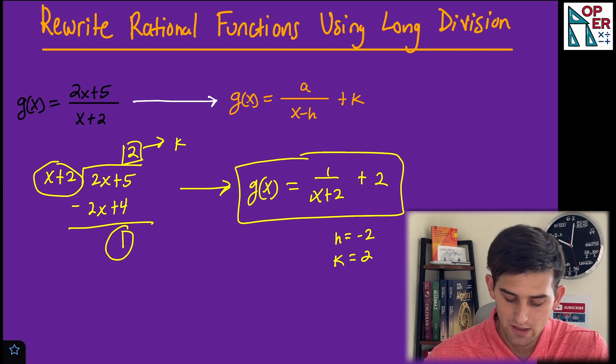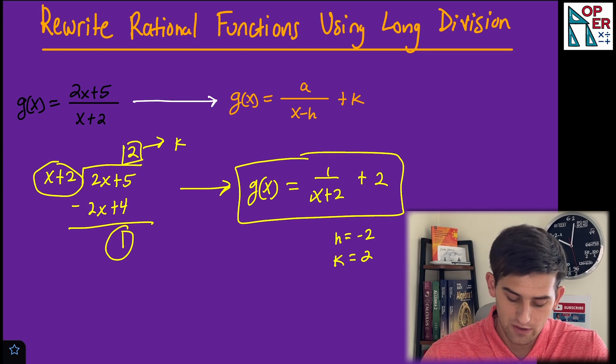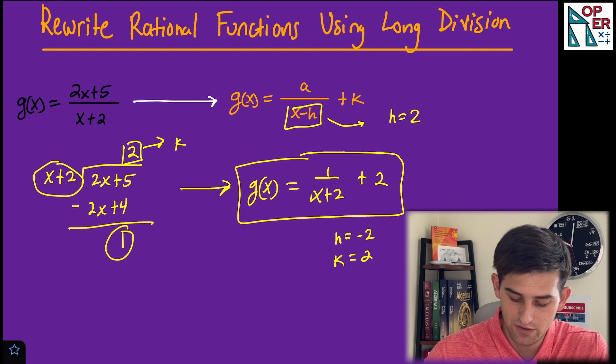Now you might be saying, wait, why is h negative 2? Shouldn't h be positive 2? Well, if we look at our original equation here, it's x - h, right? So if h equals 2, it would look like x - 2.